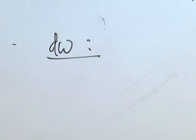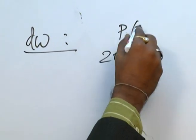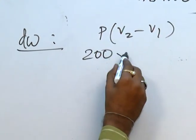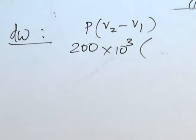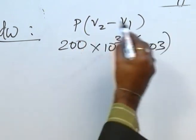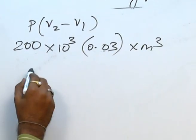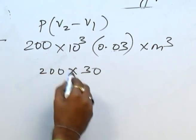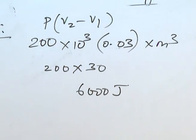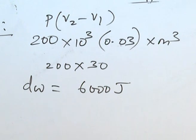Along the AB process, AB is isobaric, so DW = P × (V2 - V1). Here, 200 kilo Pascal into (0.04 - 0.02), that is 0.02 meter cube. So 200 into 0.02 gives 6000 joules. This is the work done DW.